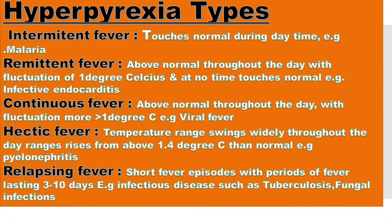Now I am going to explain in detail about the types of hyperpyrexia. The first one is intermittent fever — the body temperature usually touches normal in the daytime and rises in the nighttime. An example is malaria. The second one is remittent fever, where the body temperature rises and remains elevated throughout the day with a fluctuation of 1 degree Celsius, and at no point does it touch normal. Example: infective endocarditis. The third one is continuous fever, where the body temperature remains above normal throughout the day with a small fluctuation of 1 degree Celsius. Example: viral fever.